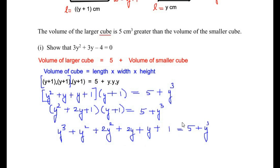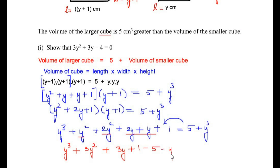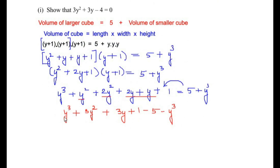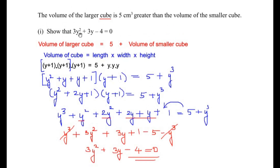Bringing all terms to one side: y³ plus y² plus 2y² plus 2y plus y plus 1 minus 5 minus y³ equals 0. The y³ terms cancel. Combining like terms: 3y² plus 3y, and 1 minus 5 gives negative 4, so 3y² plus 3y minus 4 equals 0. This is the required result.